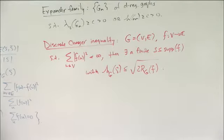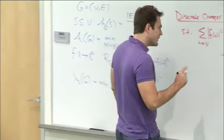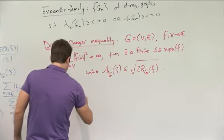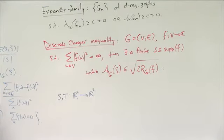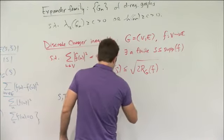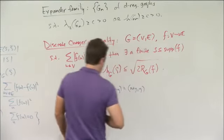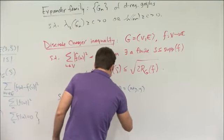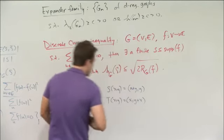Now we are ready to start the proof. Let me state the main technical lemma. Suppose S and T are maps from the plane to itself defined by: S of (x,y) maps (x,y) to (x+y, y), and T of (x,y) maps (x,y) to (x, y+x). I'll also need the inverses of these functions.